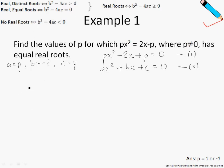For real and equal roots, discriminant b squared minus 4ac is equal to 0. Since b is negative 2, let me perform the substitution: a is p, c is p.